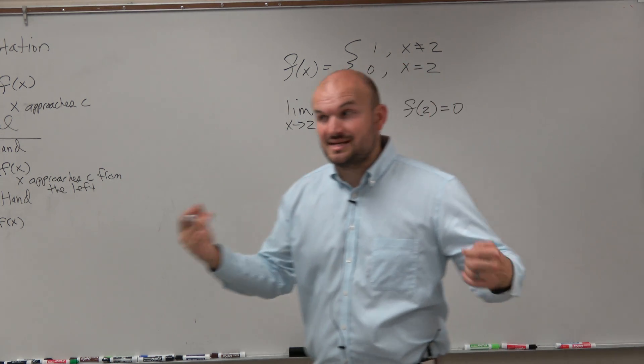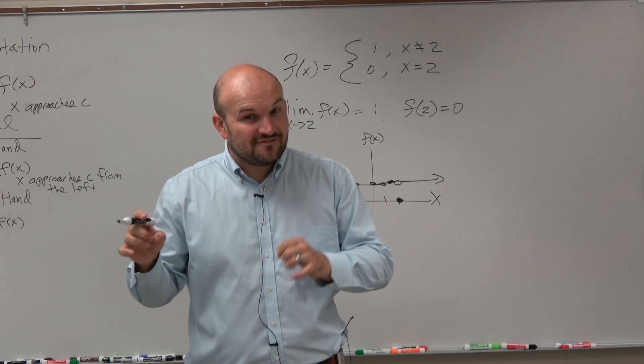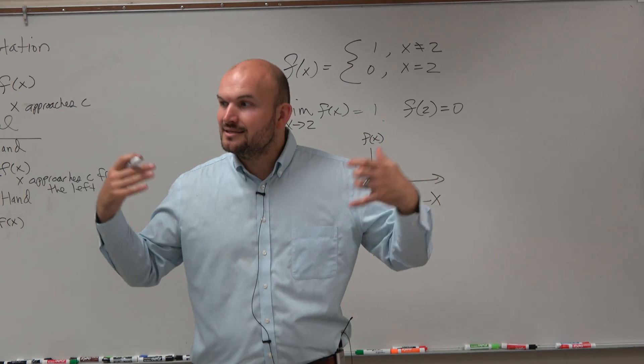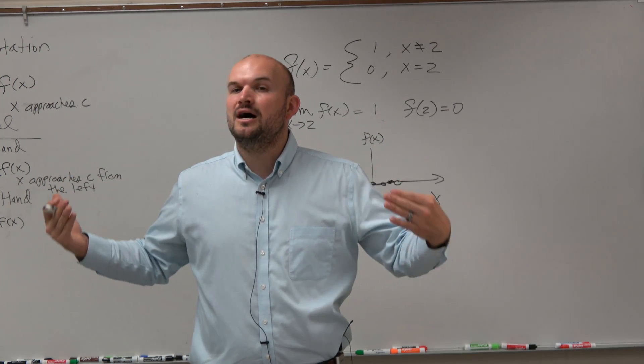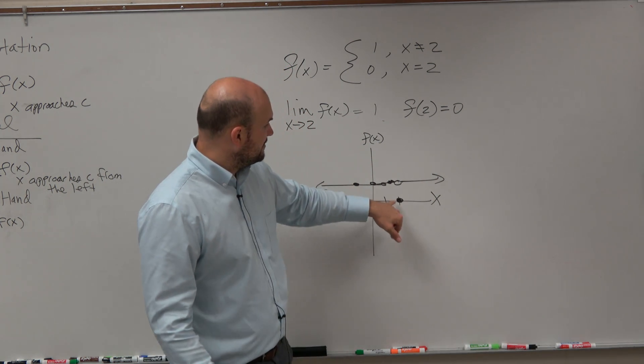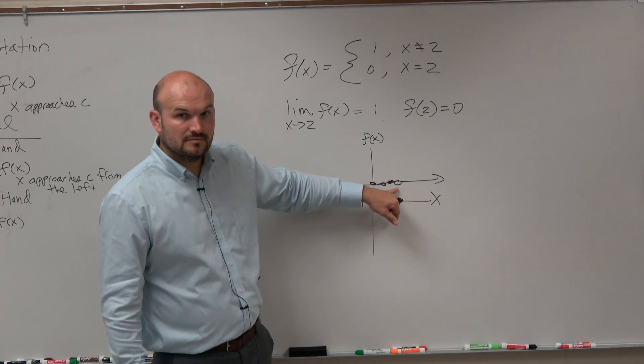So, this is really important because guys, the value of the function can differ from the limit. Because again, I have to drill this into your head. The limit is what the graph is approaching. It's not the value of the function. The value of the function is 0. But what is the graph approaching? 1. Right?